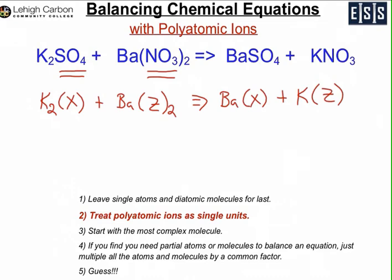So let's do our balance. Starting with potassium: we have two potassiums on the left side. We go to the other side of the equation and notice we only have one, so in order to balance we put a two. Now we have two potassiums and they balance on both sides. With that two, we now have two Zs on the right side. We look back on the left side and there are two Zs as well, so the Zs are balanced.